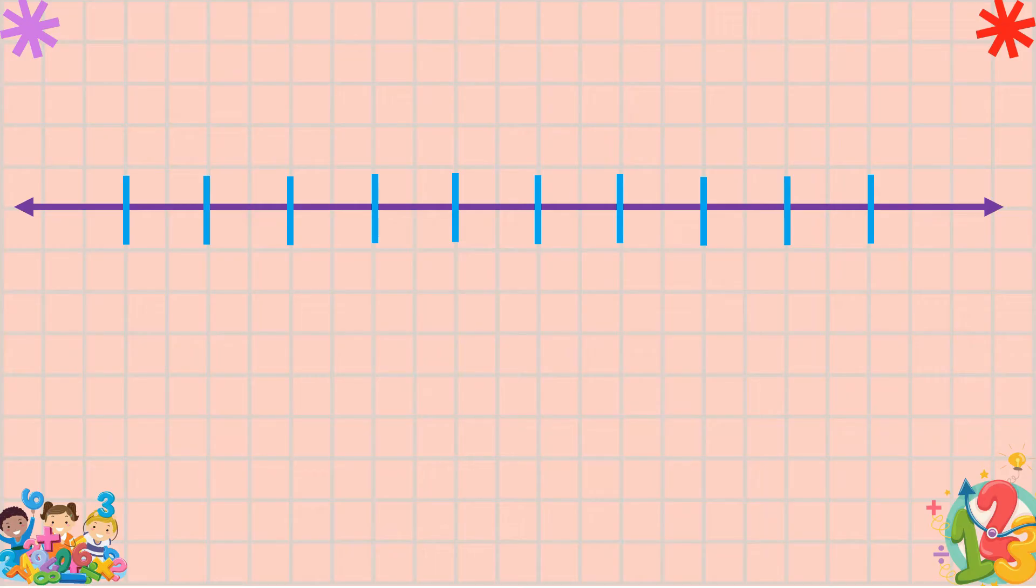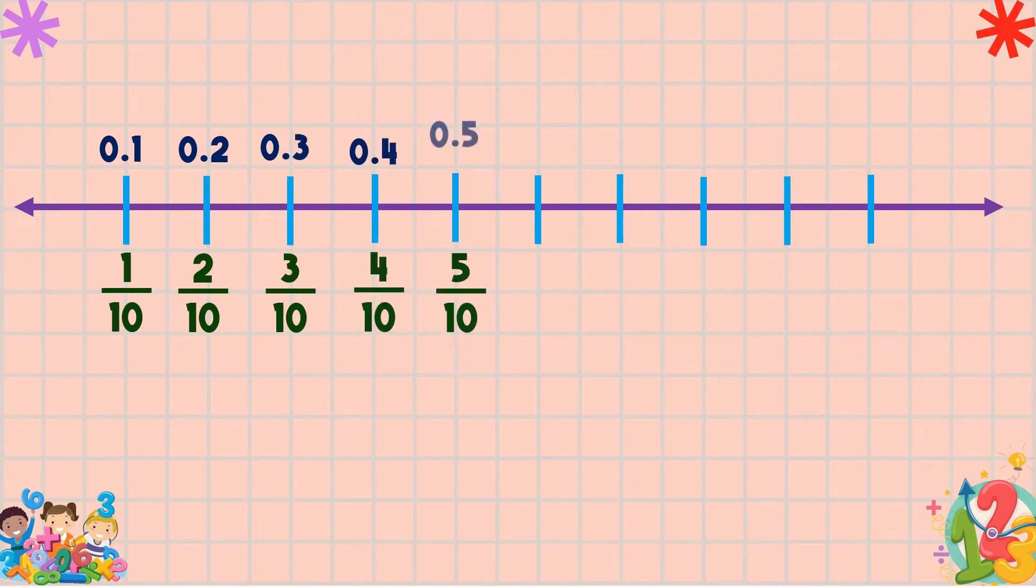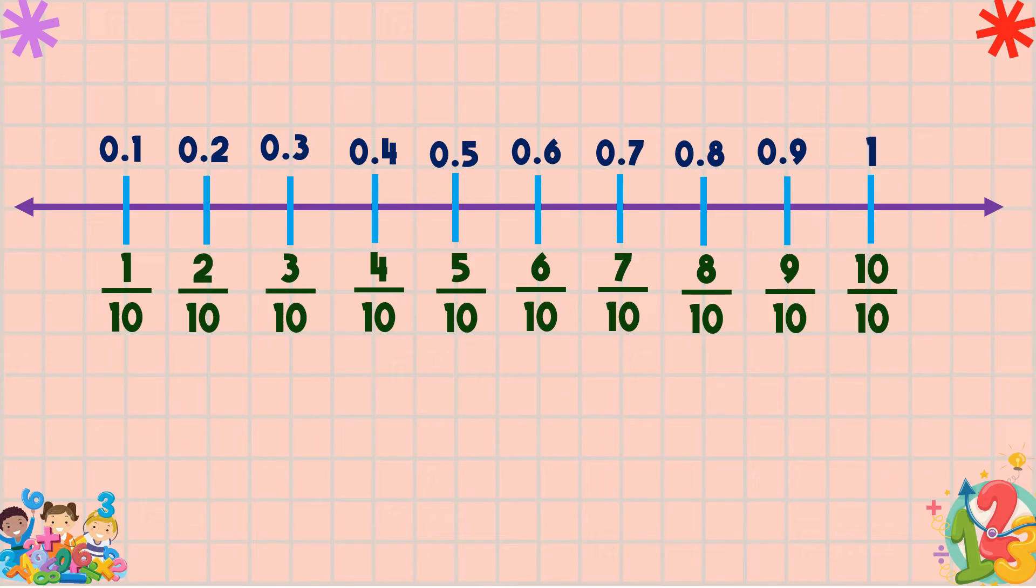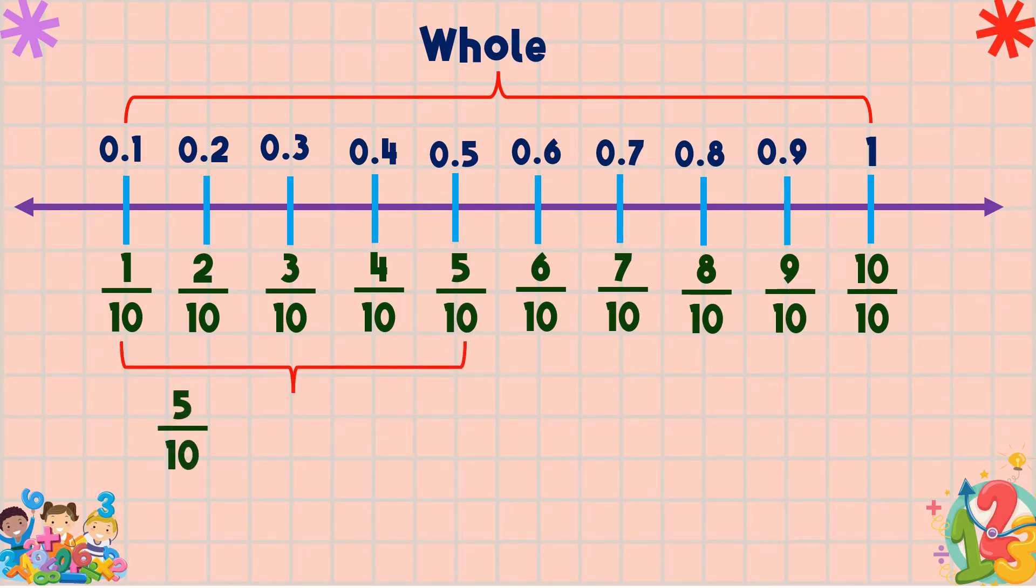Now let's use the number line. Below we're going to use the fraction form, and above is the decimal form. Suppose that this number line represents one whole. Half of it is five-tenths, or in lowest terms, one-half. In decimal form, it is 0.5.